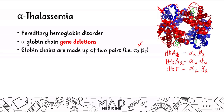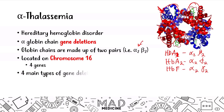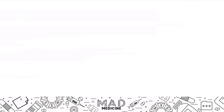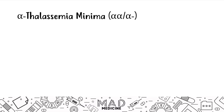The alpha thalassemia genes are located on chromosome 16, and there are four genes, meaning you have four main types of gene deletions. The first type is called alpha thalassemia minima, and in this case you're going to have one gene deletion causing alpha thalassemia minima.